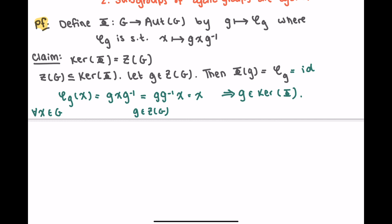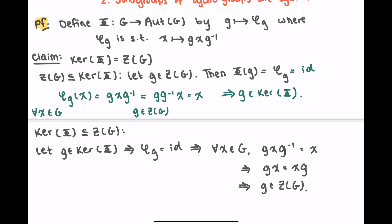Now I want to show that the kernel is contained in the center. Let little g in kernel capital phi. What this means is that phi sub g is equal to the identity function in the automorphism group. So for all x in G, gxg inverse is equal to x because it's just the identity map. If I apply g to the right on both sides, this means that gx is equal to xg. This is for all x in G. This is just the definition of g being in the center of the group.